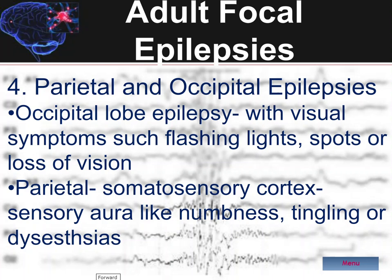In occipital lobe epilepsies, there are frequently visual symptoms with auras such as flashing lights or visual spots as a positive phenomenon, but they may be misrecognized as being the aura of a migraine headache.